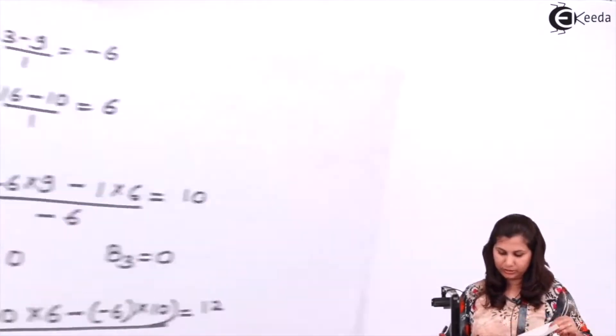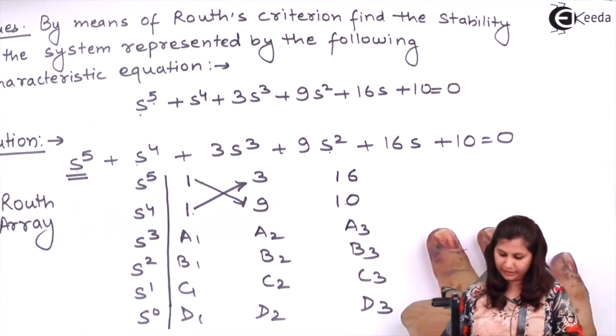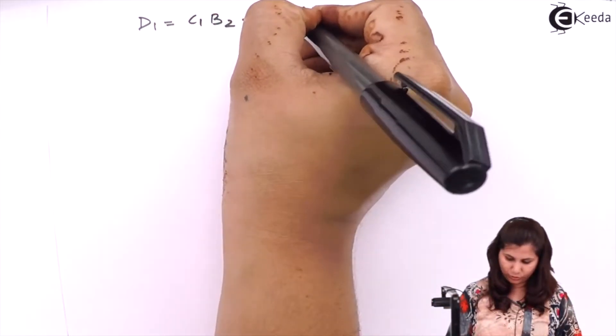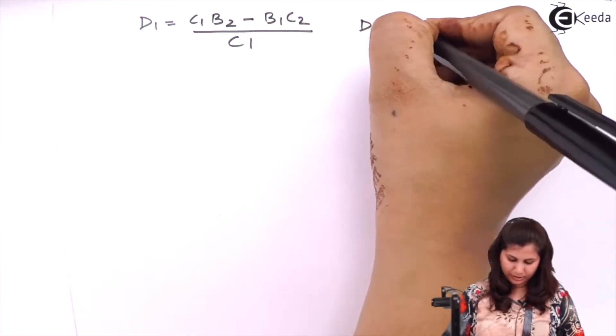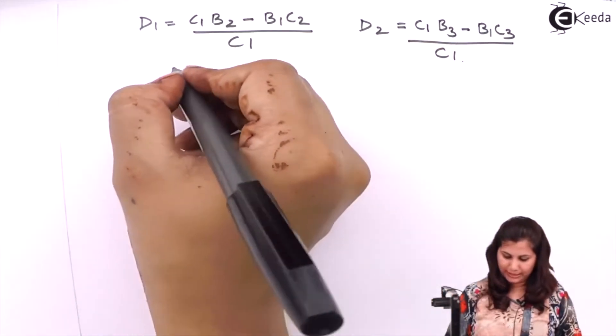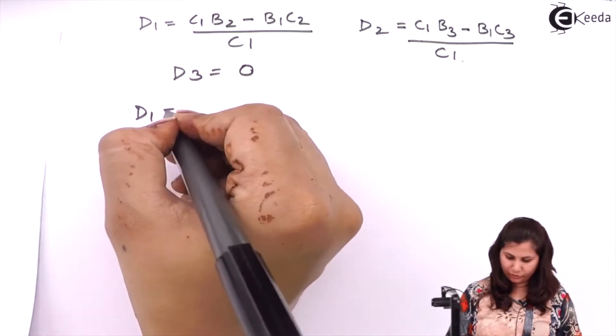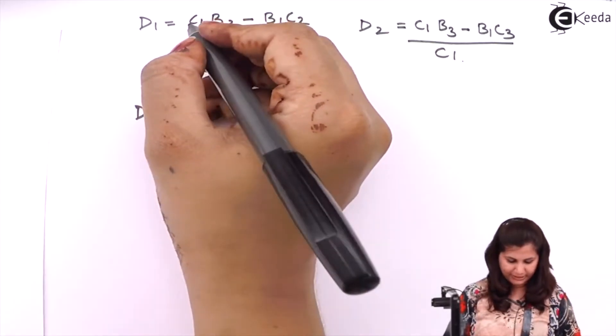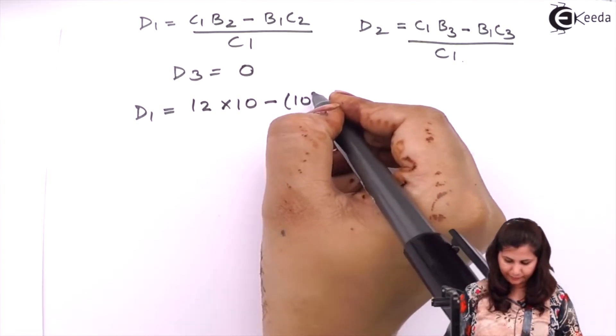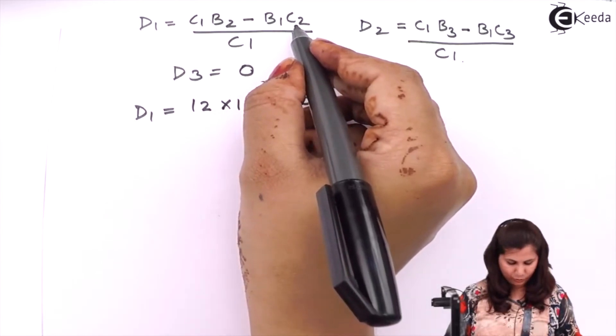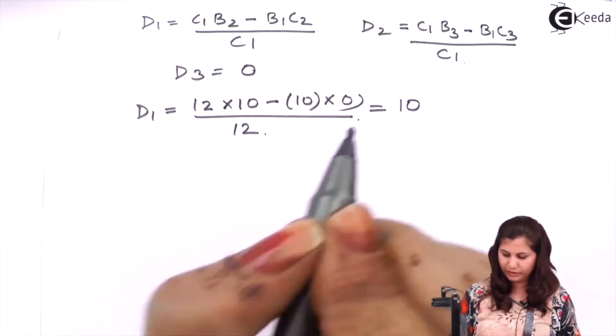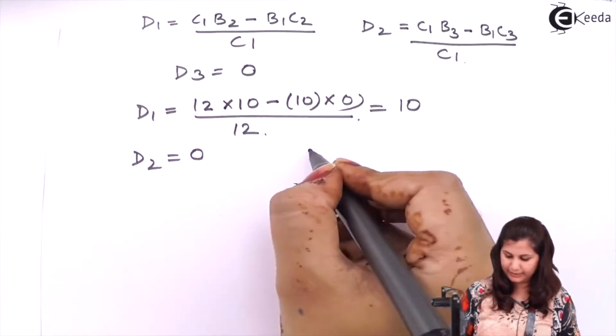Now d1 will be c1*b2 minus b1*c2 upon c1. d2 will be c1*b3 minus b1*c3 upon c1. So d1 will be equals to 10. When you calculate d2 it will be 0 and d3 will also be 0. So we have obtained all the variables of this Routh array.